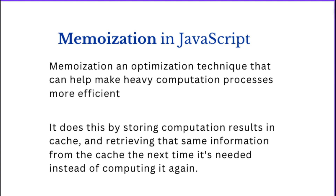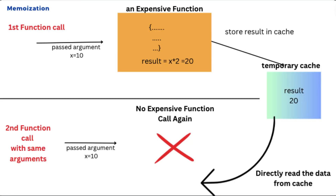Expensive functions are those functions which take some time in execution, so it is very important to optimize such functions. In the concept of memoization, whenever we call a function, we store the result of that function temporarily as a cache. If the same request is made again for the same data, instead of doing that calculation again, we return the result from the cache. Memoization is a technique of caching the result of expensive function calls to speed up a program by returning the cached result when the same input occurs again.